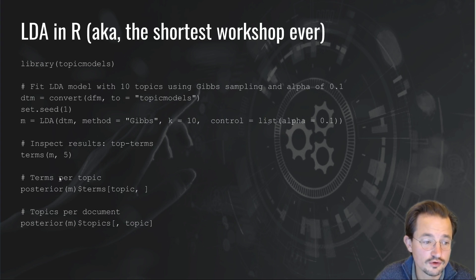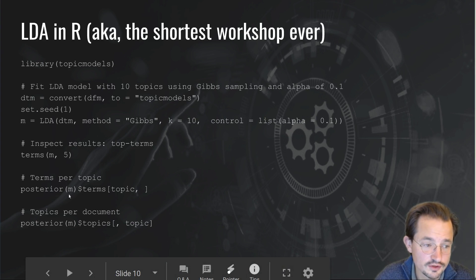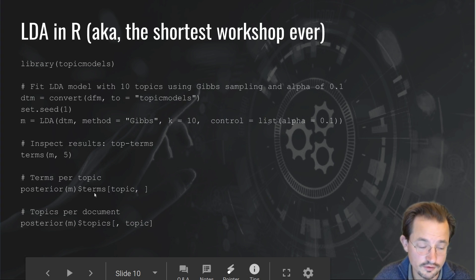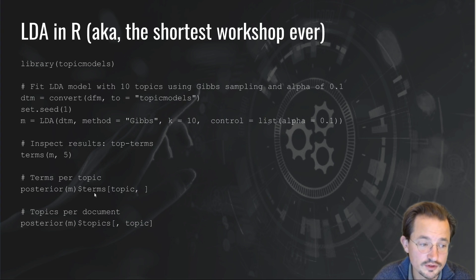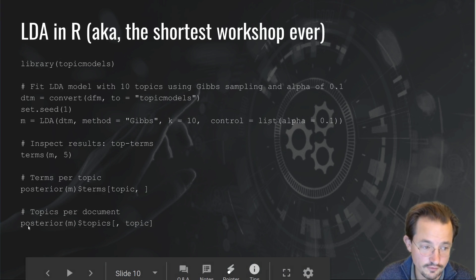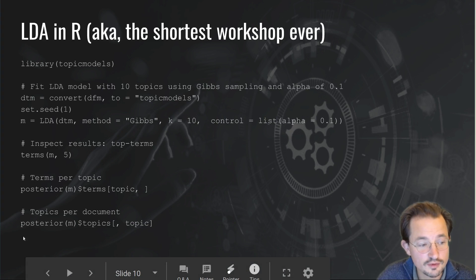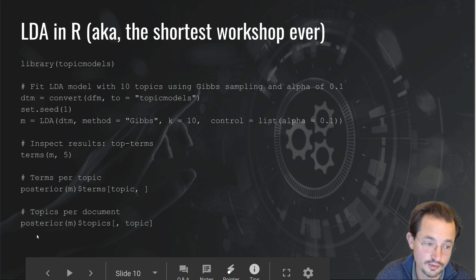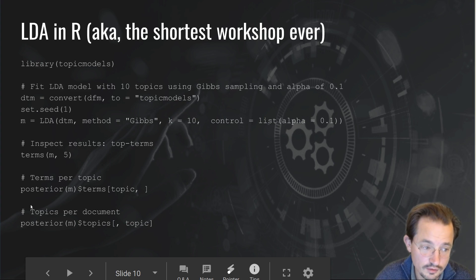Rather than the discrete top 5, you can also ask for the full scores — the posterior distribution of the topic over terms. You can see as a probability, as a percentage, how strongly each term fits in each topic. You can get the same score for the documents, telling you how strongly each document scores for each topic. This last one is really important for substantive analysis, because you want to see which documents contain what topics.